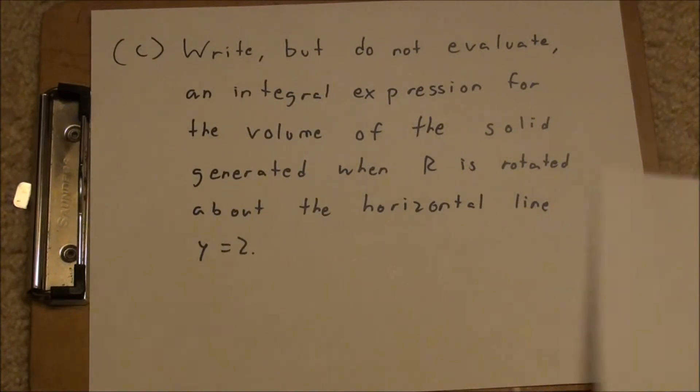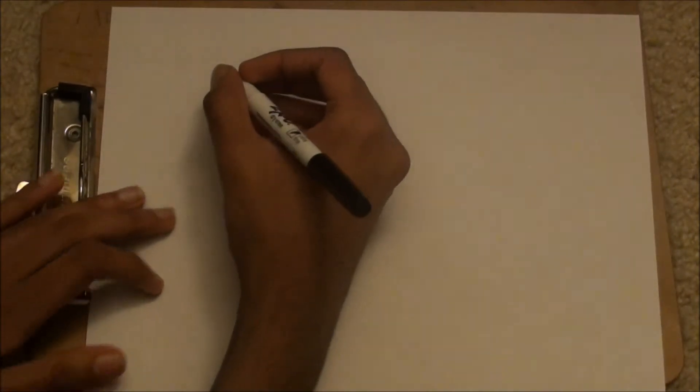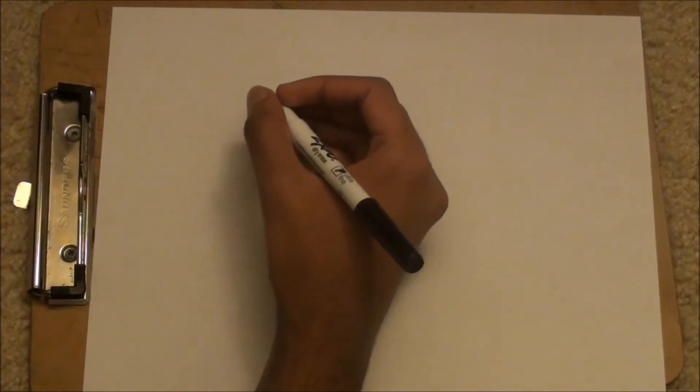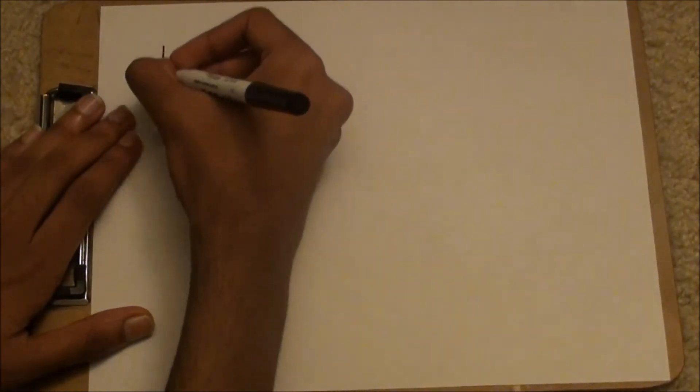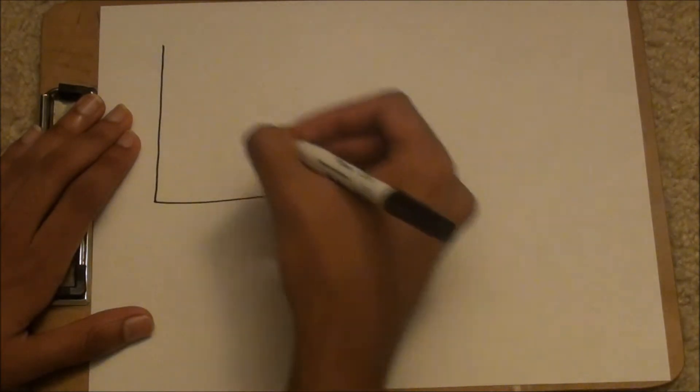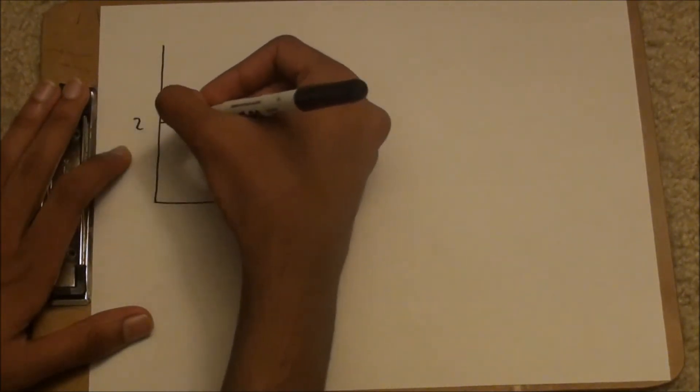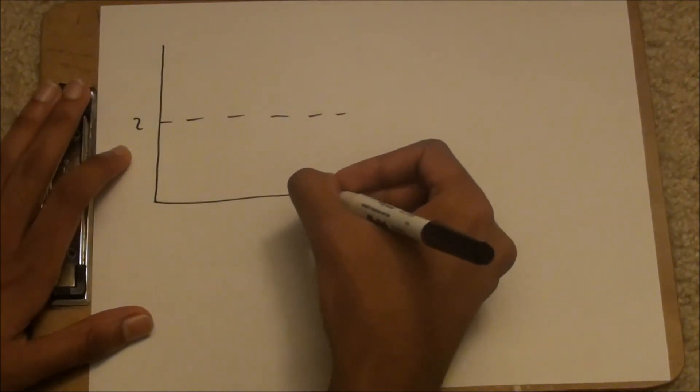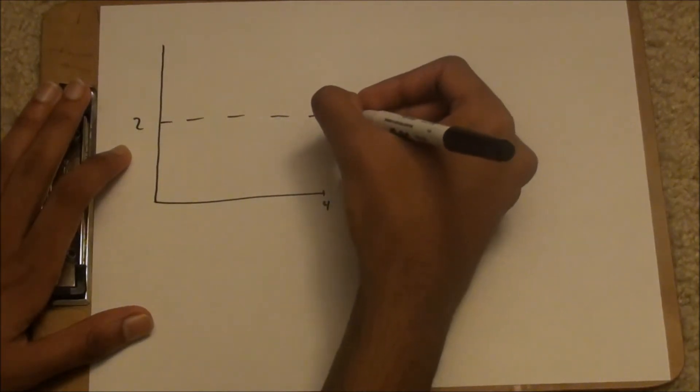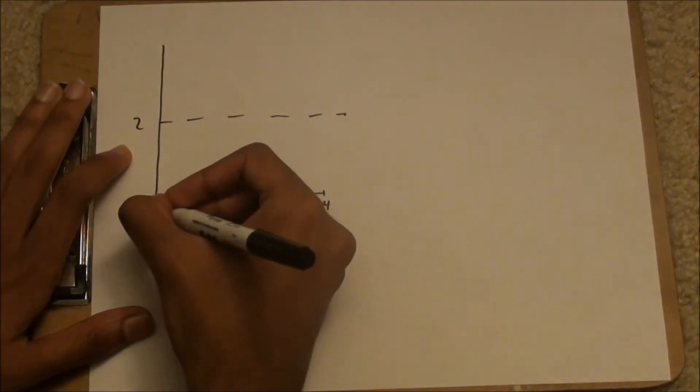So just so we can visualize that, let's draw it out. That would look like... Let's see here... This is 2... This is 4... This is 4 here... 1 here...